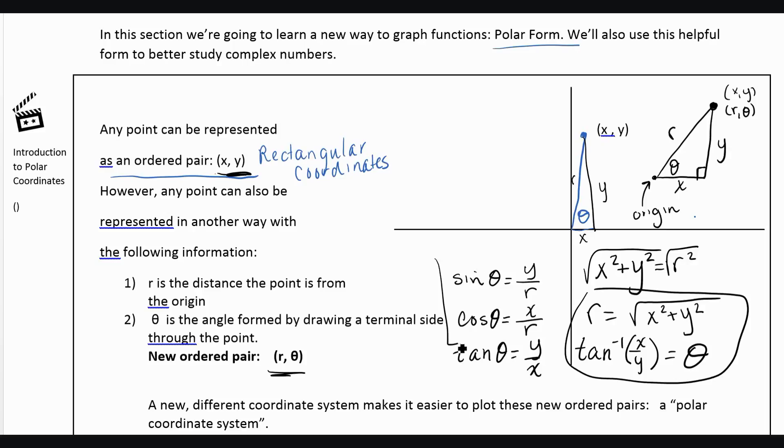And we'll actually use these two equations when we have R and theta and we want to find X and Y. So we'll talk a little bit more about that, but I wanted to show you that all of this comes from using a right triangle and very simple trig. That's how we'll convert between the two.